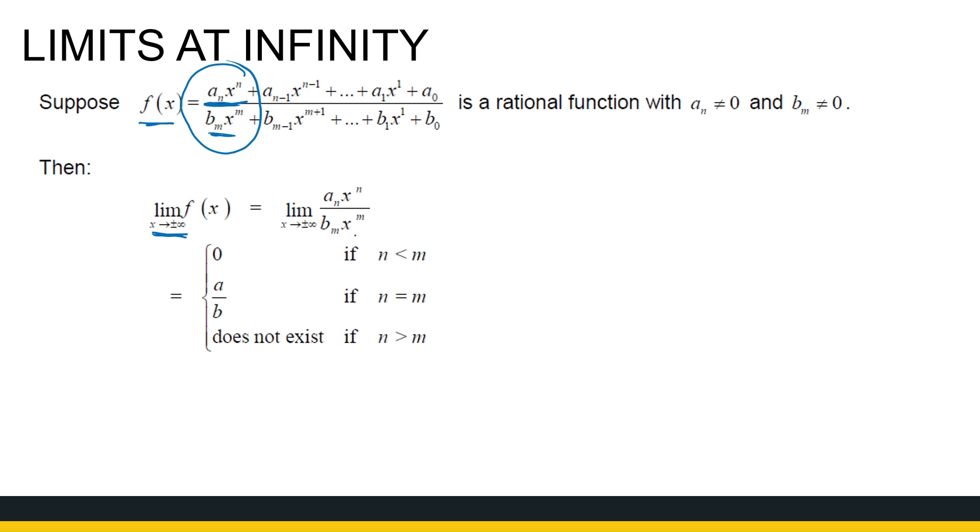When I look at the leading terms, if my numerator has an exponent larger than my denominator, then that limit is not going to exist. If those exponents are the same, then the limit value is just the a value over the b value. If my numerator has a smaller exponent than my denominator, then my limit goes to zero.